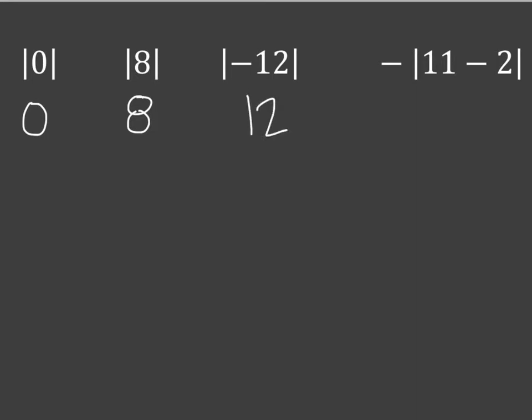The absolute value of 11 minus 2 would be negative. 11 minus 2 is 9. Now the absolute value of 9 is 9, and I keep that negative in front. So that's how that works when the negative is on the outside of the absolute value.